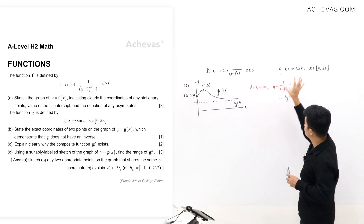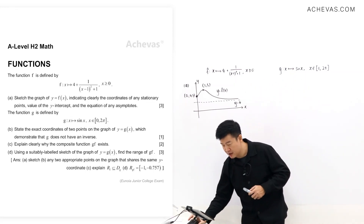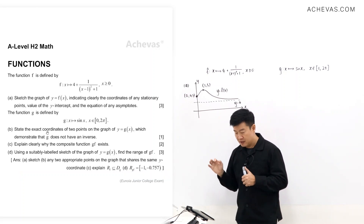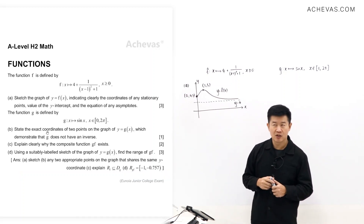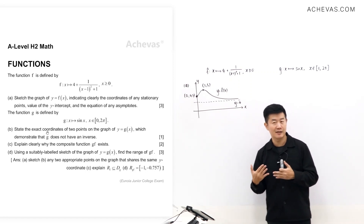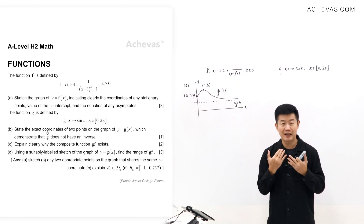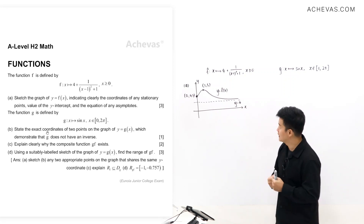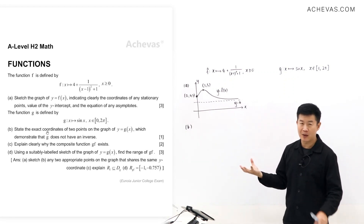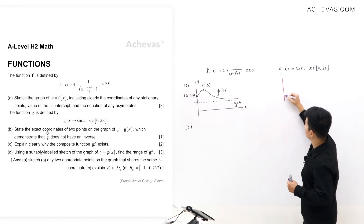In part B, we move on to our second function g. We are required to state the exact coordinates of two points to demonstrate that g does not have an inverse. If g does not have an inverse, it is not a one-to-one function. We can use the horizontal line test to analyze this. The graph of g is just a sine graph, so I don't even need my graphing calculator — I know the graph is going to look something like this.